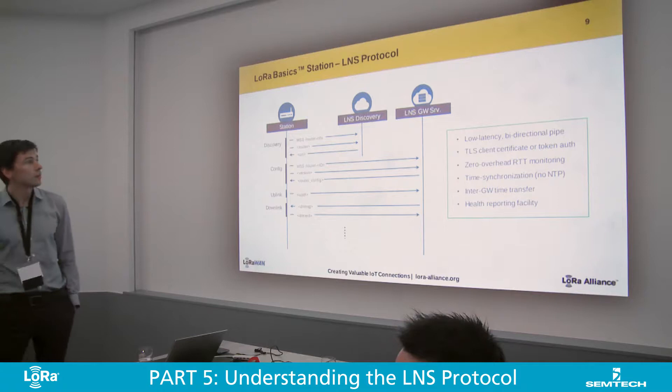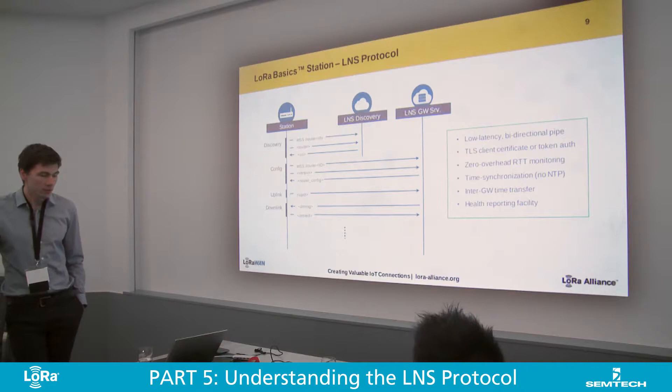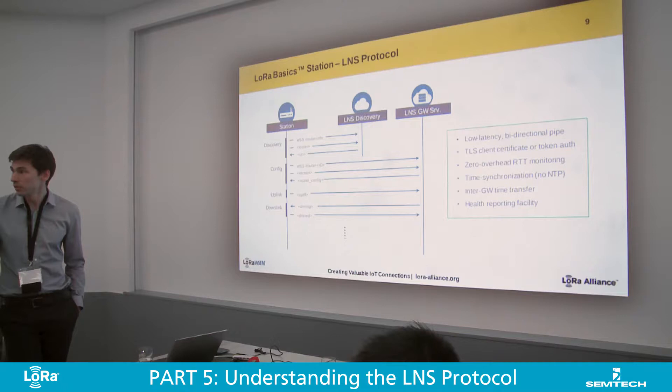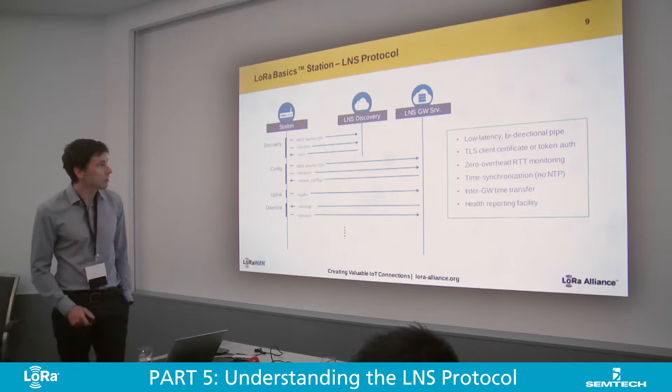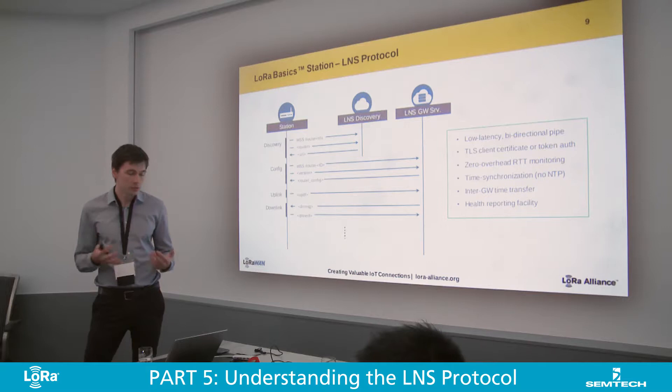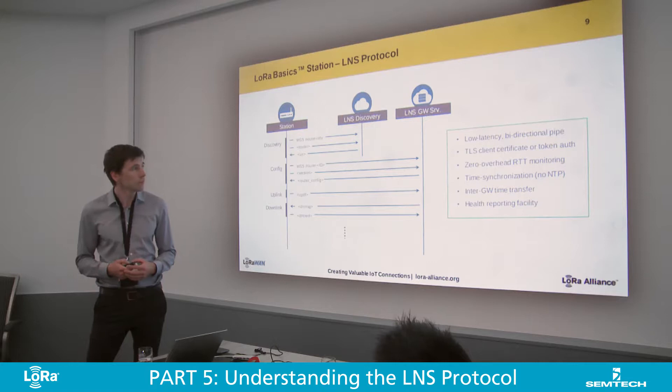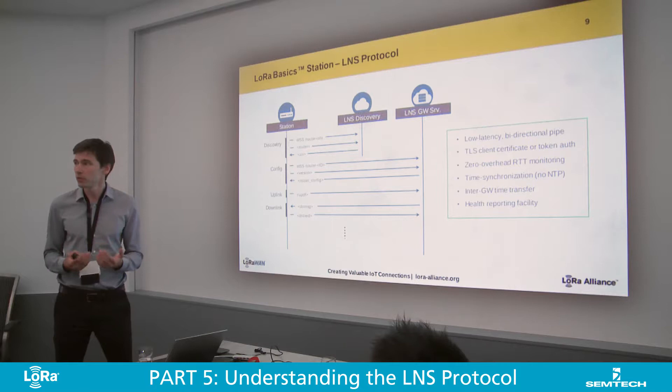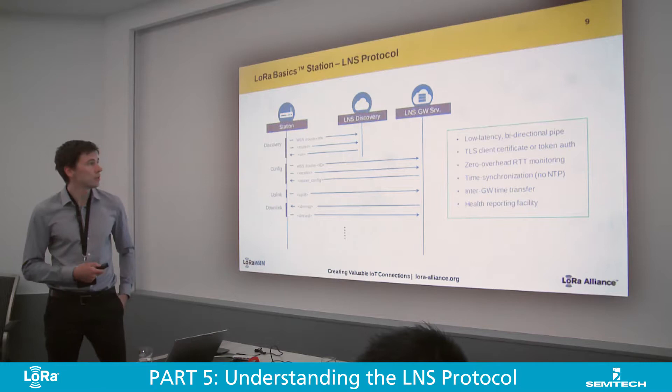So what does the message exchange look like? As a transport layer, it uses WebSockets and the messages are encoded in JSON. It's a TLS client and server — so a mutually authenticated channel — using WebSocket as a transport layer and JSON as the message encoding scheme. This actually gives you a lower latency bidirectional pipe. Compared to other transport layers, this is really what gives you the lowest latency between the gateway and the backend.